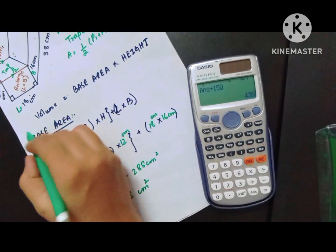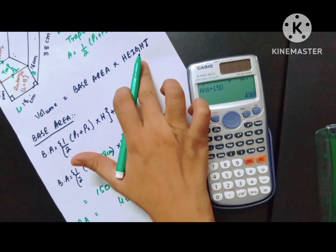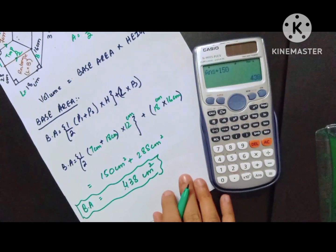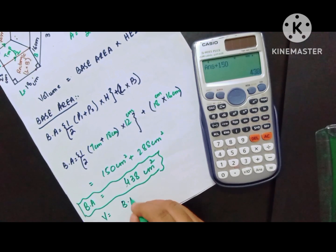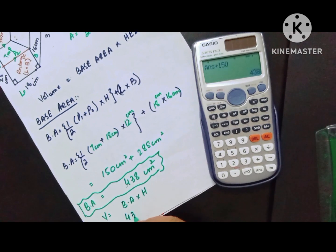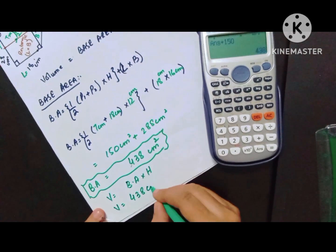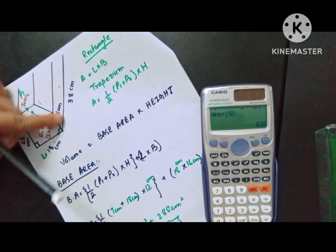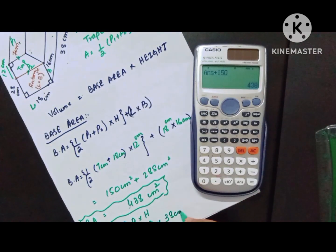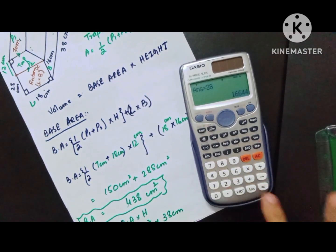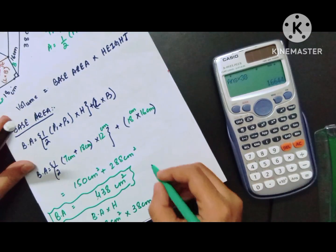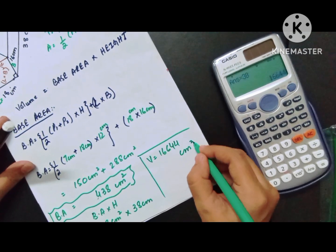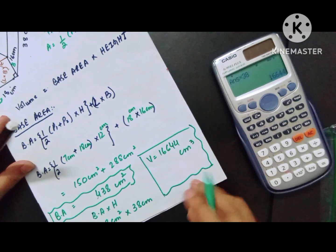The actual formula for the volume of the prism is base area multiplied by height. The base area is 438 cm². Now multiply this base area by the height of the prism, which is 38 cm. So volume V = 438 × 38 = 16,644 cm³. That is the final answer for the given prism.